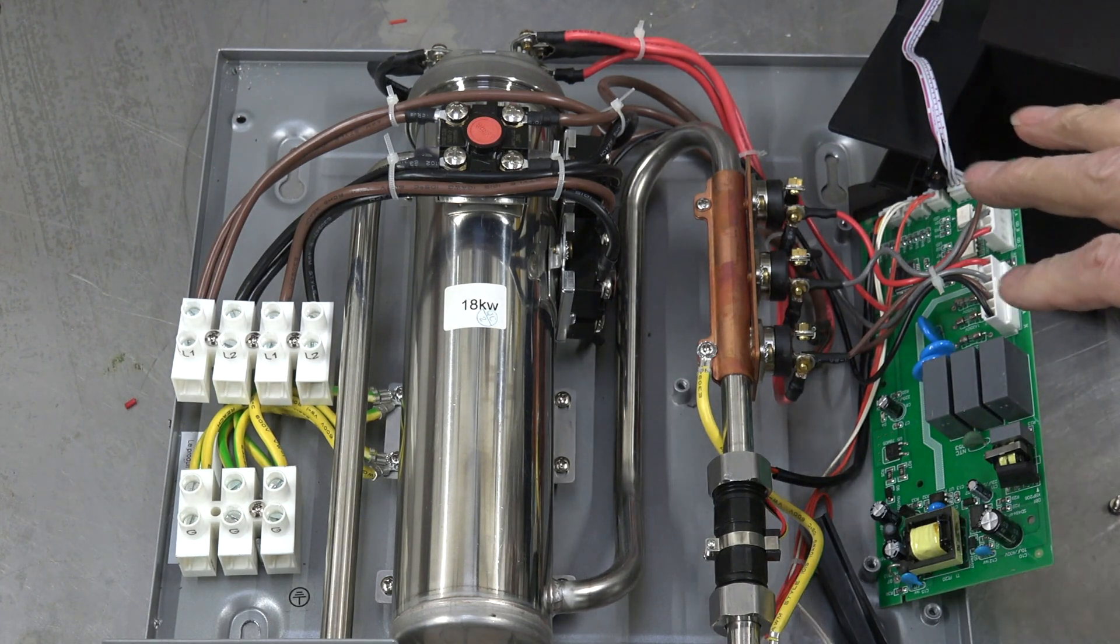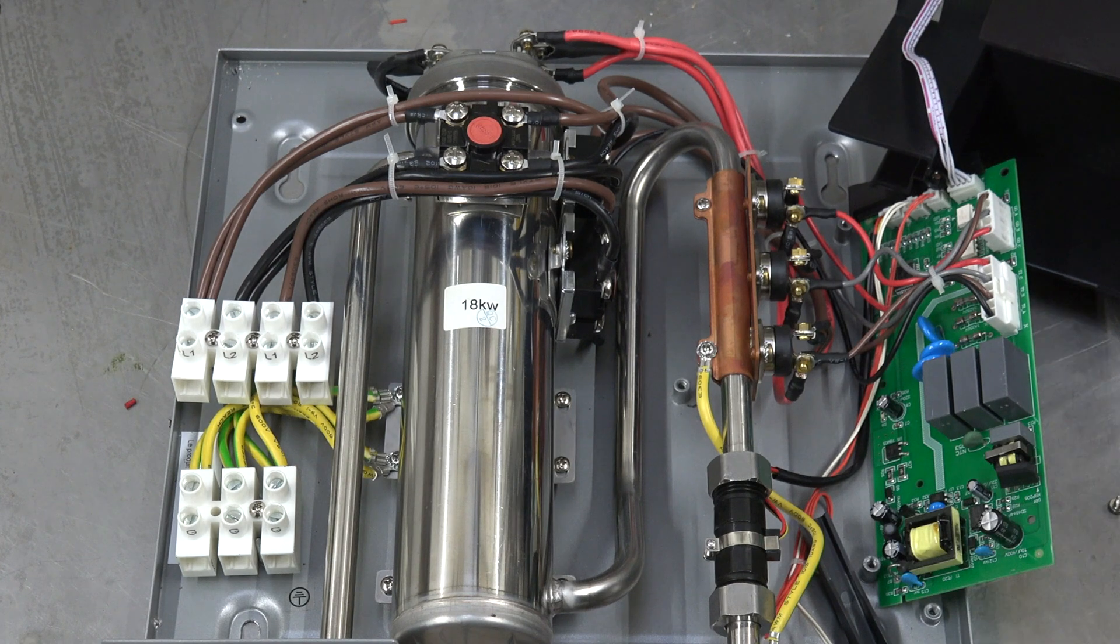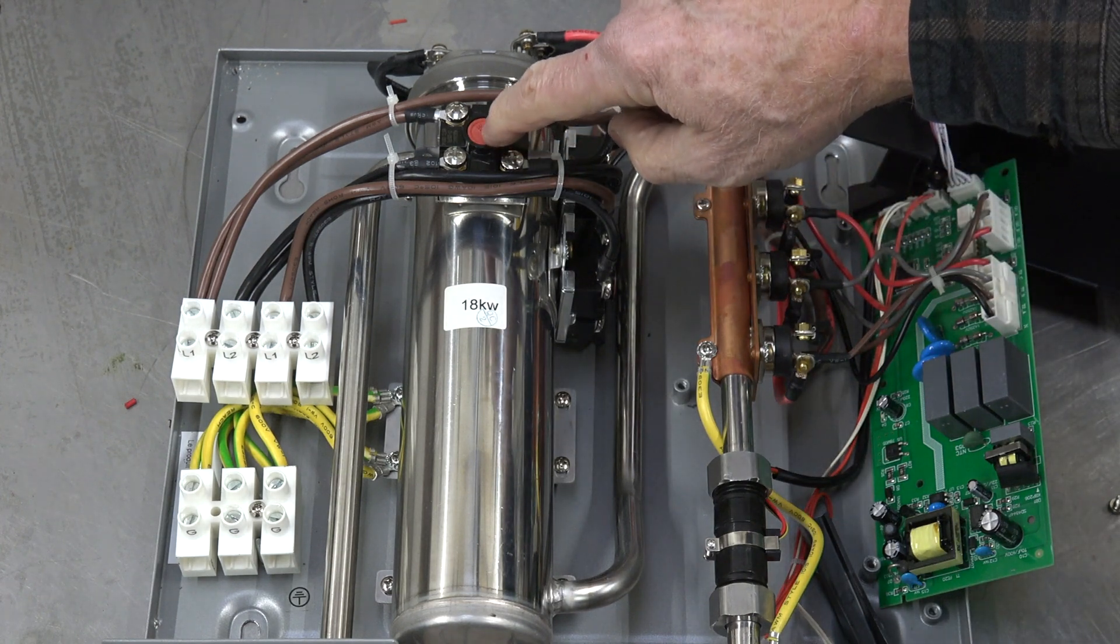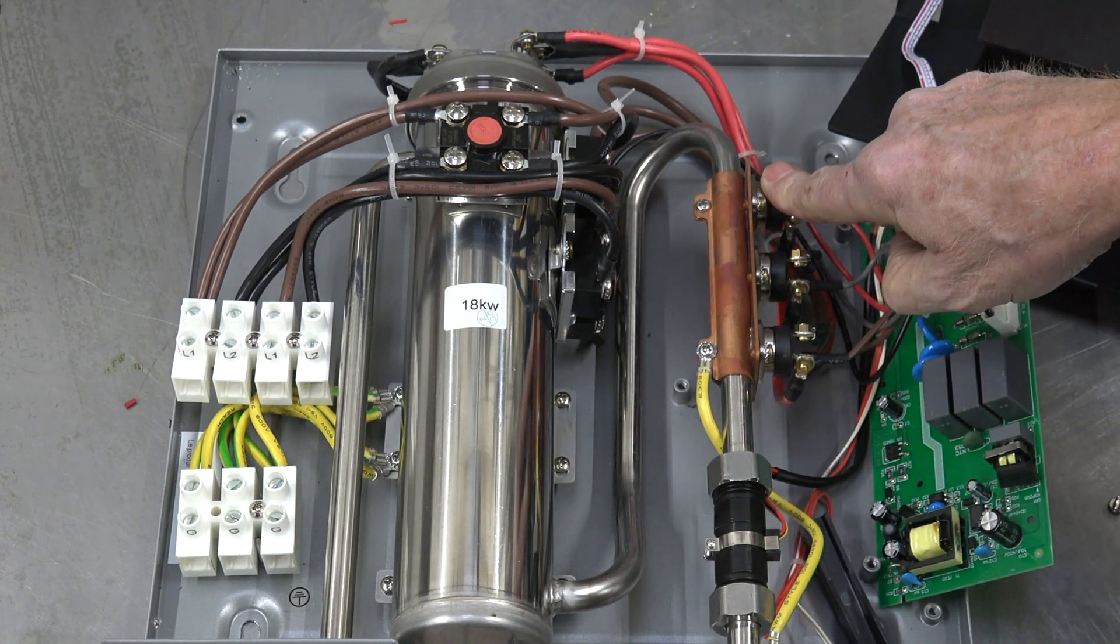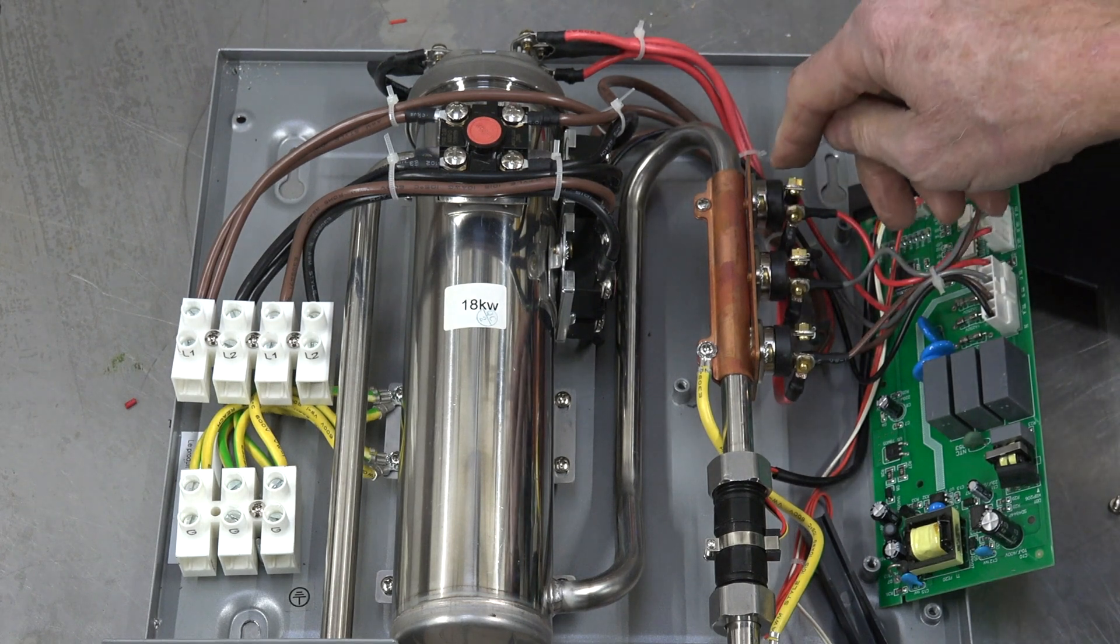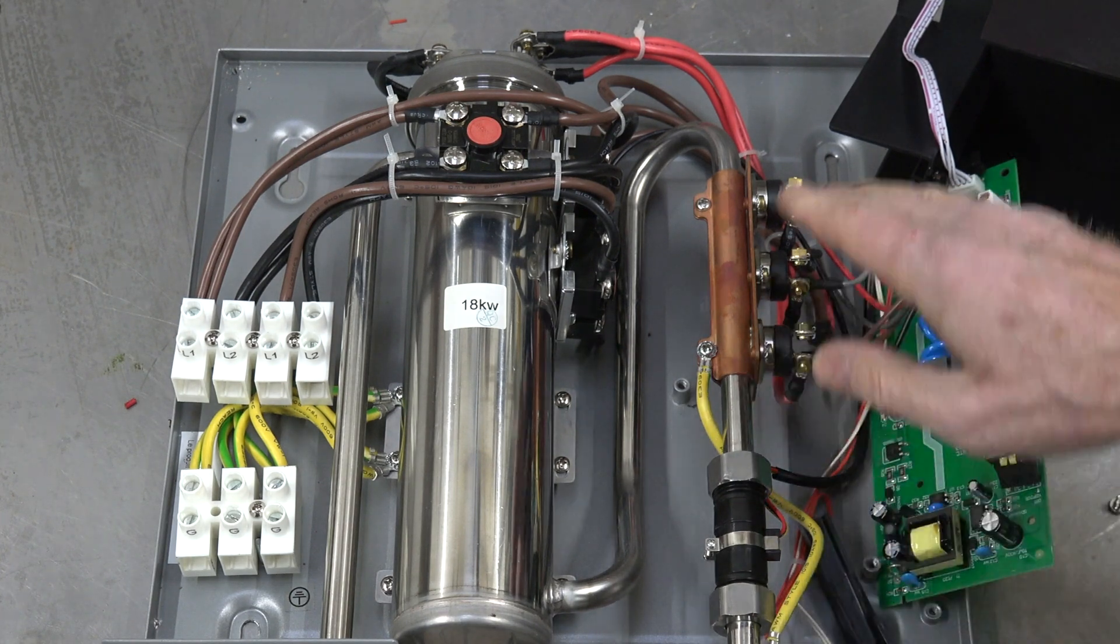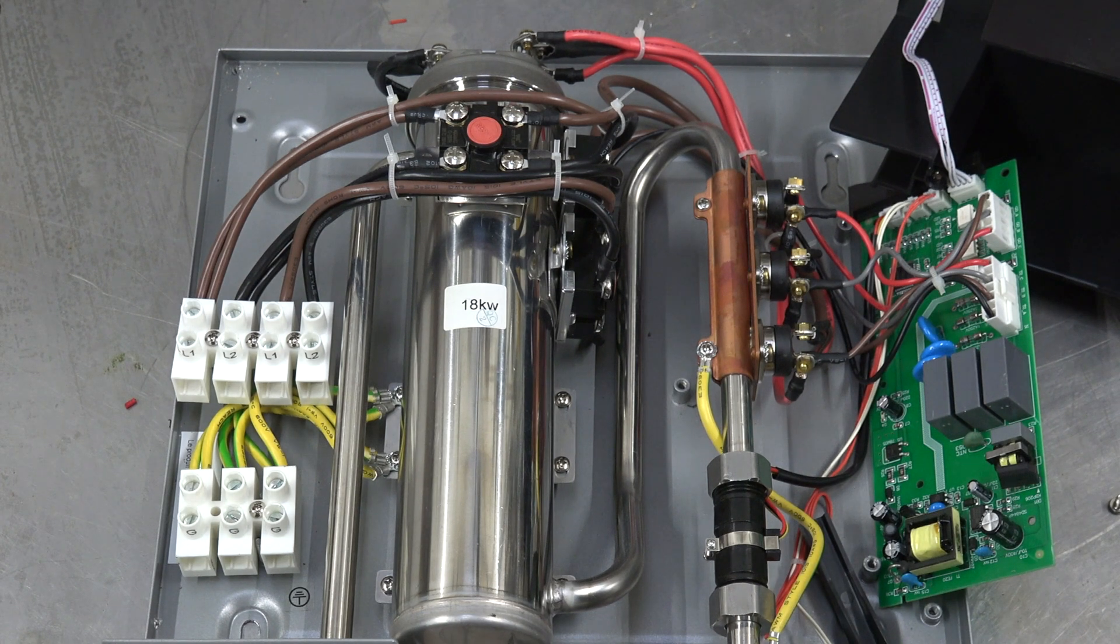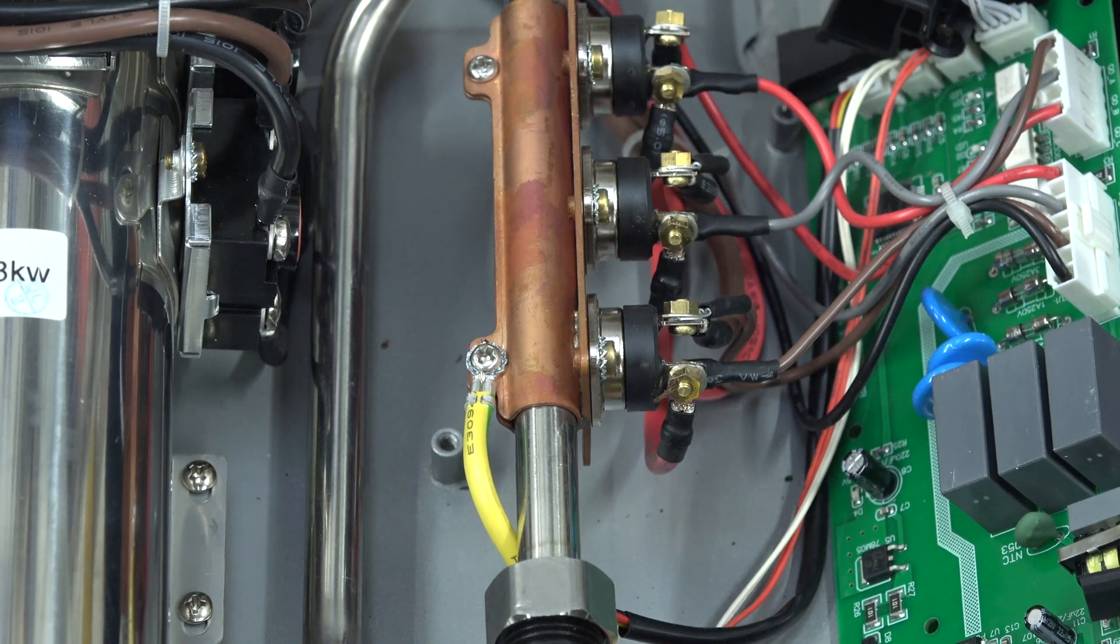So why did this thing do this? Now if one of these switches had stuck on, that would do it, because if one of the control switches leaves an element on and it's physically stuck on, then the flow switch is not going to shut it off. So let's do a little bit of troubleshooting on this thing to see if we can figure out what happened.